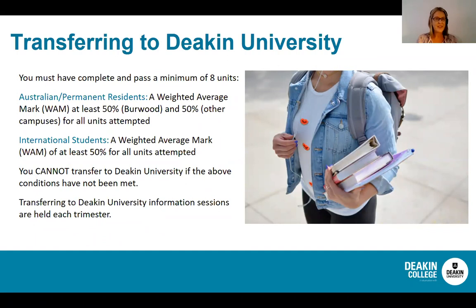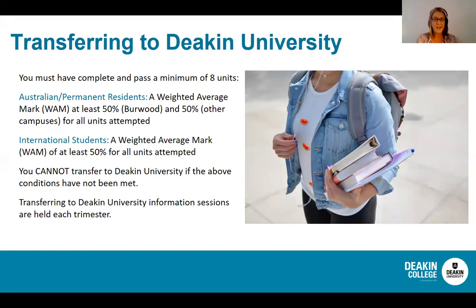To transfer to Deakin University, you must have successfully completed eight units and also maintain a weighted average mark of at least 50% for all units attempted. This only becomes a concern when units are not completed successfully, but we keep an eye on this for you and meet and discuss with you if there are any concerns or ways to support your study progress.